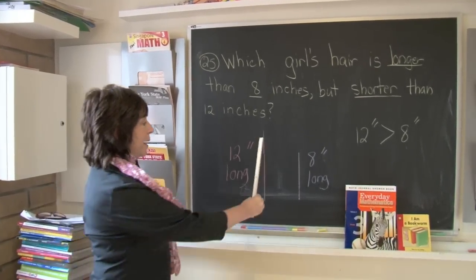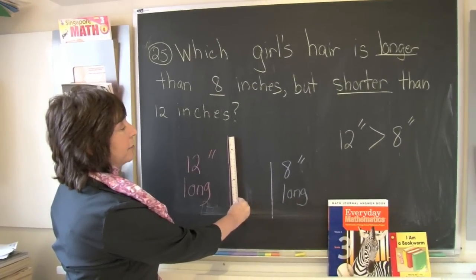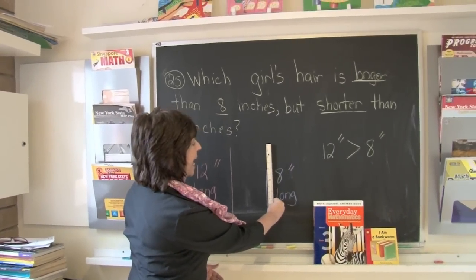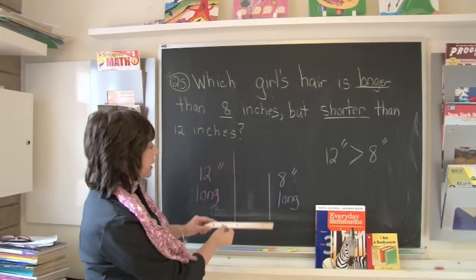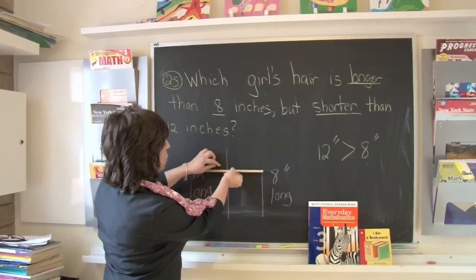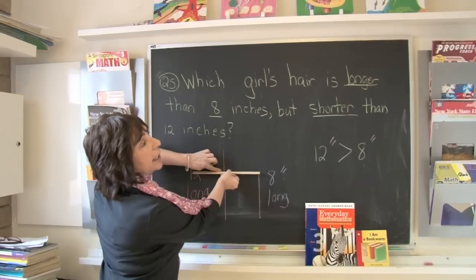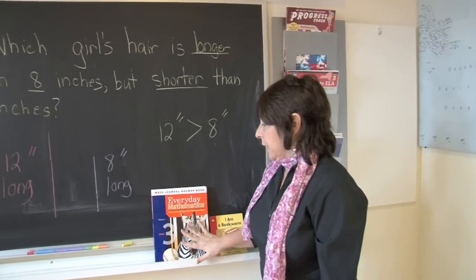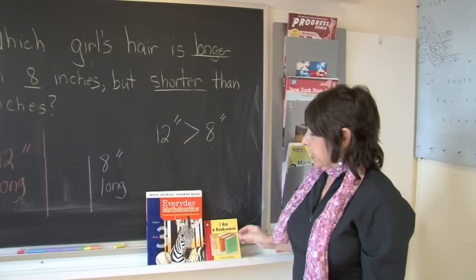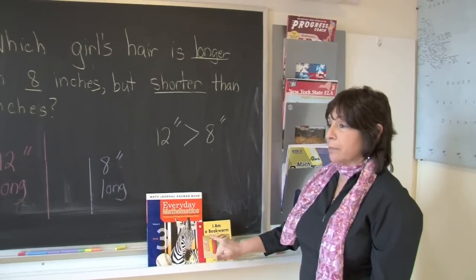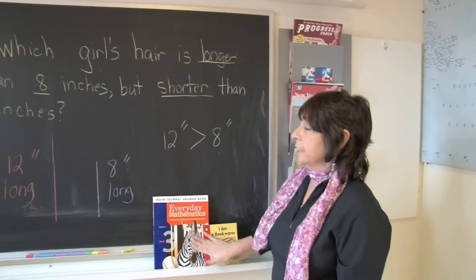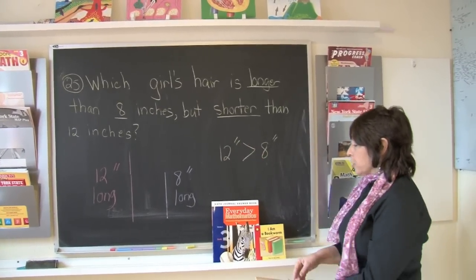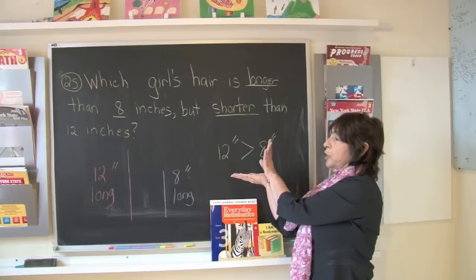Boys and girls, I used my ruler and measured a line that was exactly twelve inches long, then another line that was exactly eight inches long. As you can see, going across from eight inches, twelve inches is longer — it has more inches. Just as if we look at these two books, the everyday mathematics book is much longer than this little kindergarten book. I also wrote the inequality: twelve inches is greater than eight inches — remember, the mouth of the inequality sign is always open to the greater number.